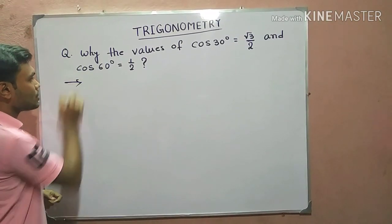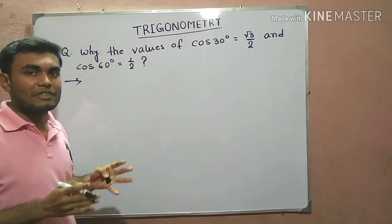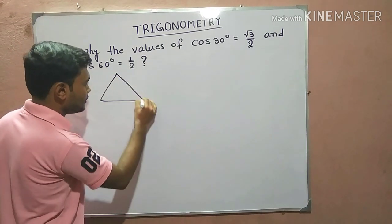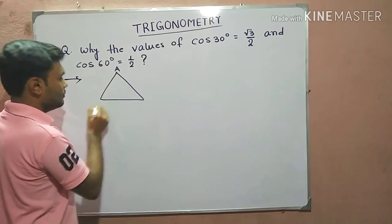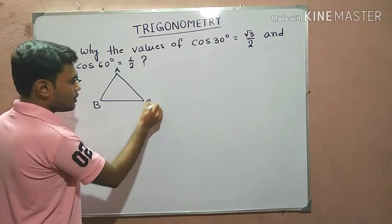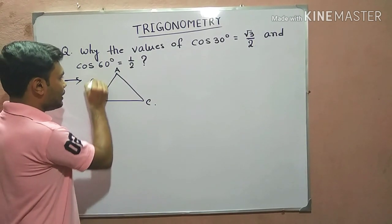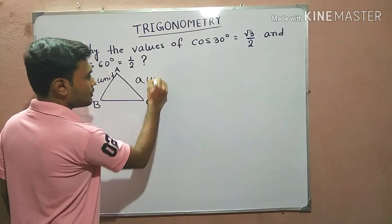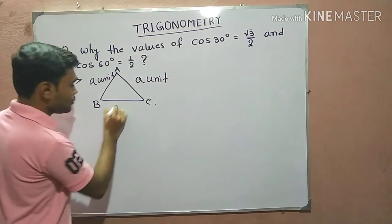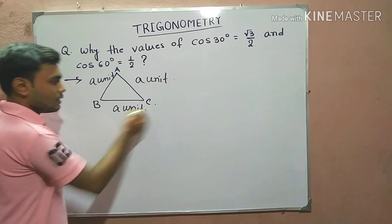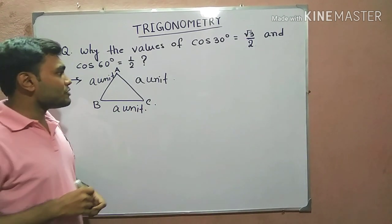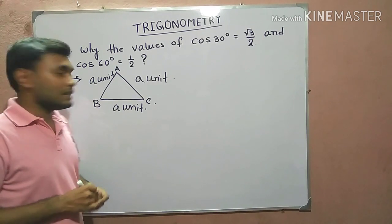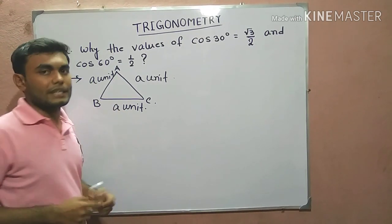For proving these values we need an equilateral triangle. So we are drawing an equilateral triangle here whose sides are a unit, a unit, and also a unit. Now we know that trigonometry is associated with the right angle triangle, and in this figure we don't have any kind of right angle triangle.